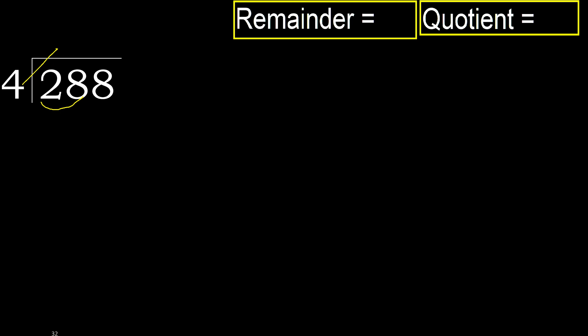4 multiplied by which number is nearest to 28 but not greater? 4 multiplied by 8 is greater. 4 multiplied by 7 is 28, it is not greater. 28 minus 28 is 0. Next.